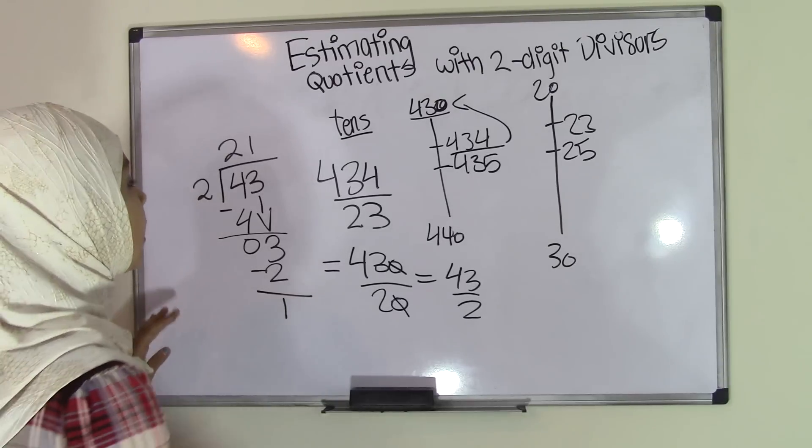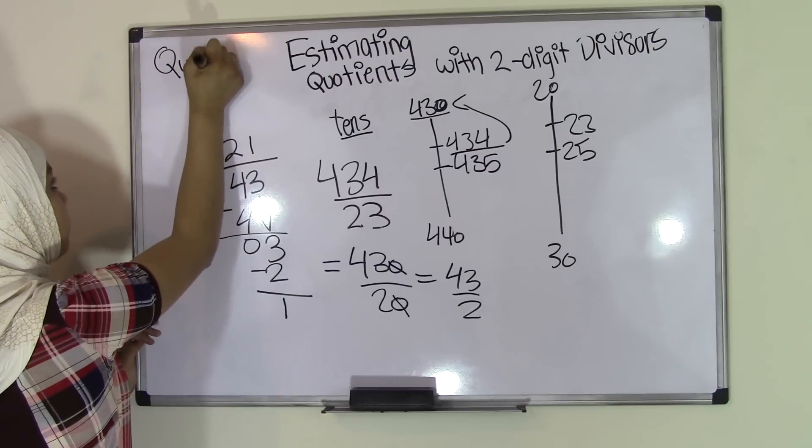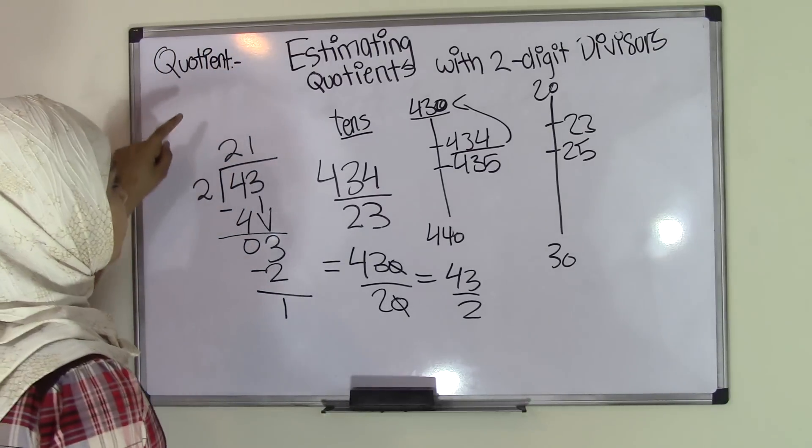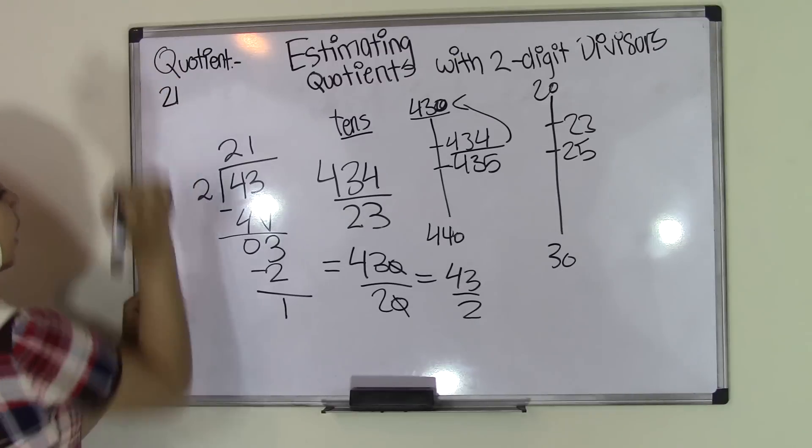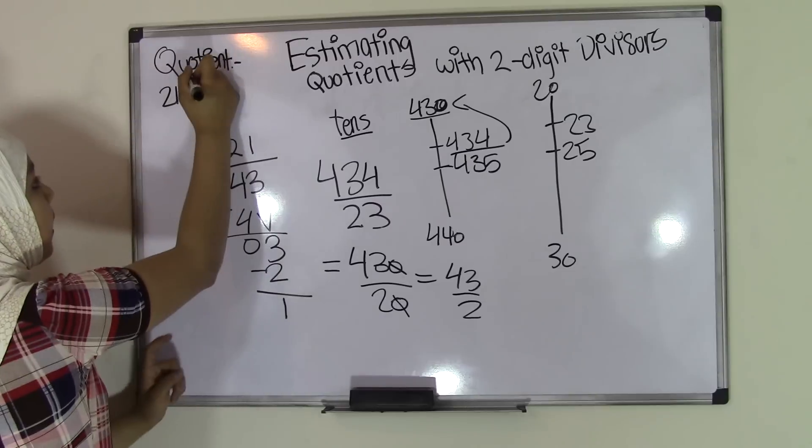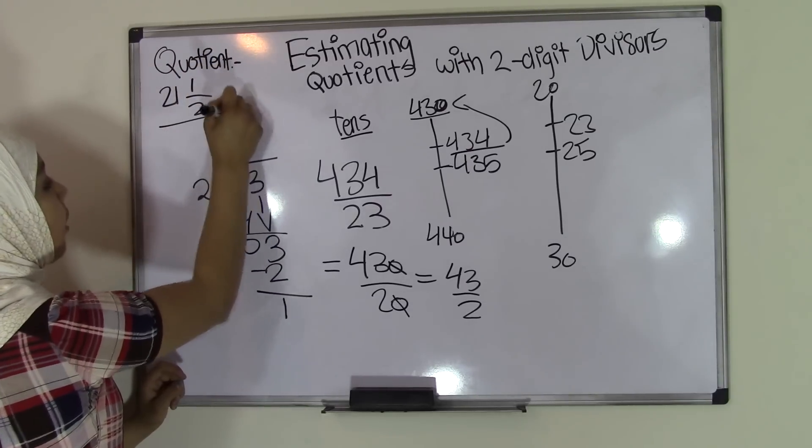If we were to leave this as it is, then our quotient would become 21. That's our quotient. And then we're going to look at our remainder, which is 1, over our divisor, 2. That means this would become our estimated quotient.